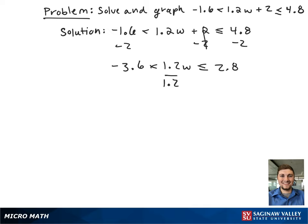Next, we're going to divide all sides by 1.2 to get the w by itself in the middle. This gives negative 3 is less than w is less than or equal to 2.3 repeating.